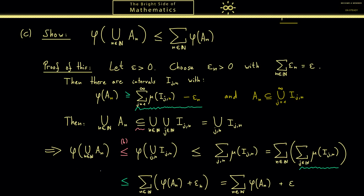Now if you read this, our inequality holds with the exception of one small error epsilon. However this epsilon was chosen arbitrarily from the beginning, which means we can choose the error as small as we want, and then no other possibility remains than that the inequality holds without an error. And with this the proof is finished. We have shown that phi is indeed an outer measure.